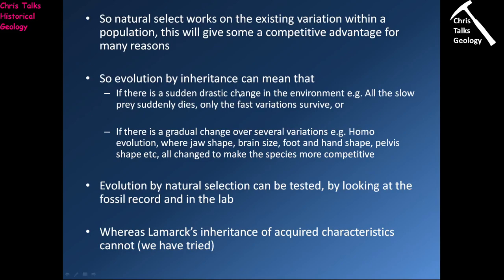Sometimes the type of natural selection we're dealing with can be a single event — if you're the fastest predator you're more likely to be successful. However, sometimes natural selection will operate over several different variables simultaneously. The nice thing about evolution by natural selection is that it can be tested by looking at the fossil record to see how things worked in the past, and it can also be tested in the lab in a controlled environment.